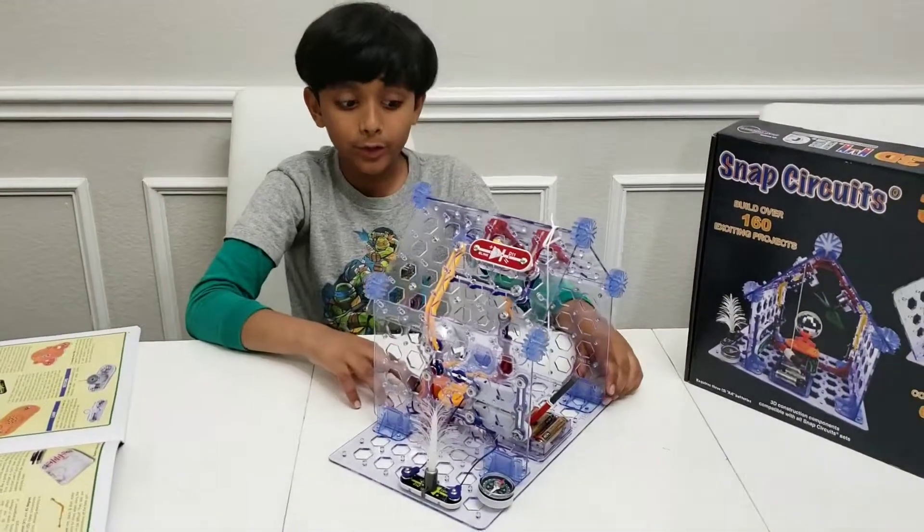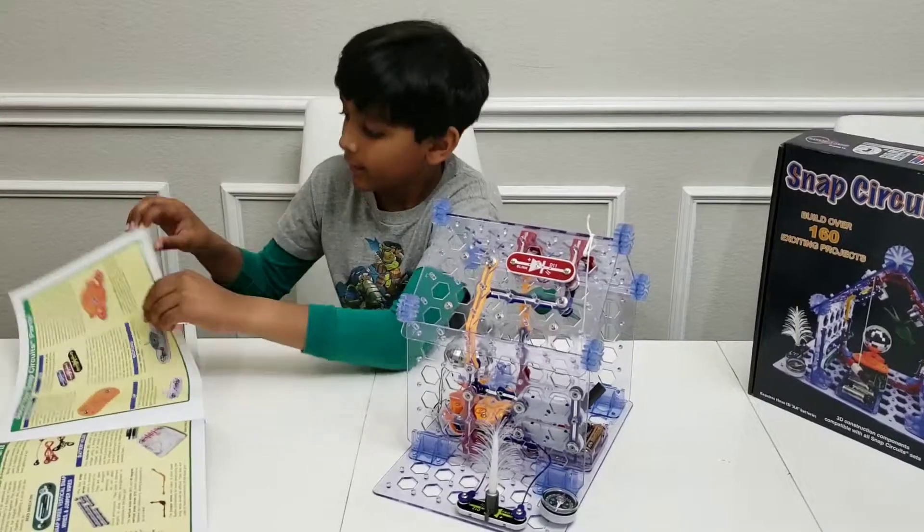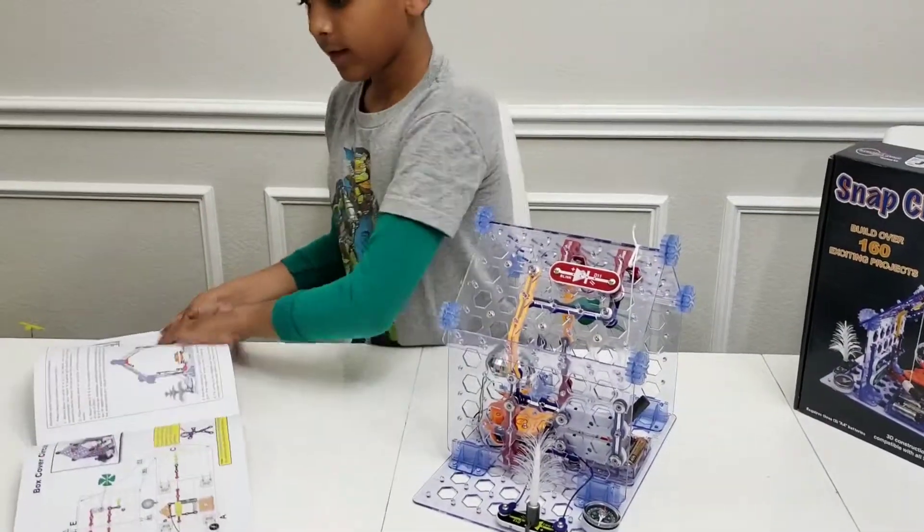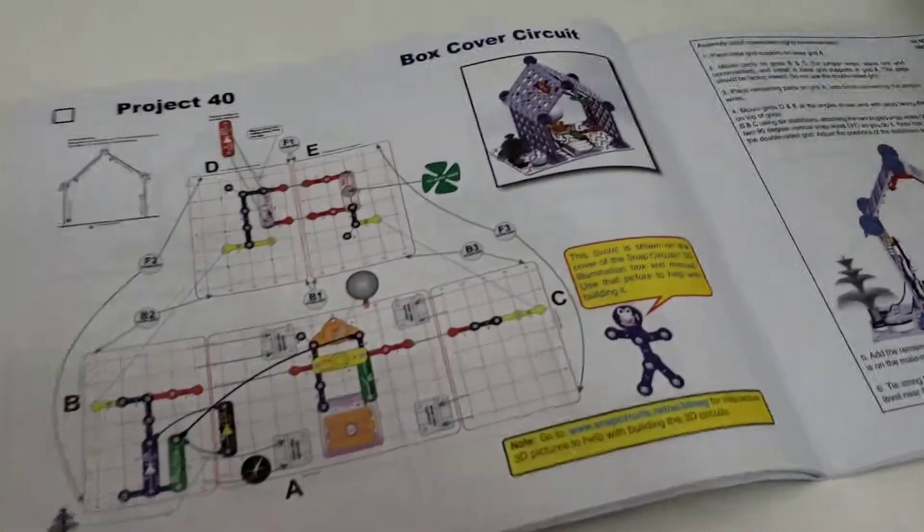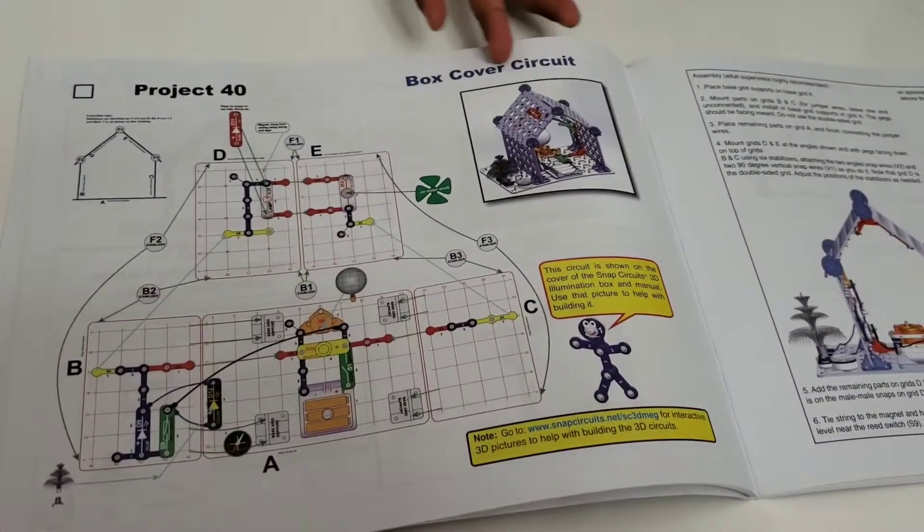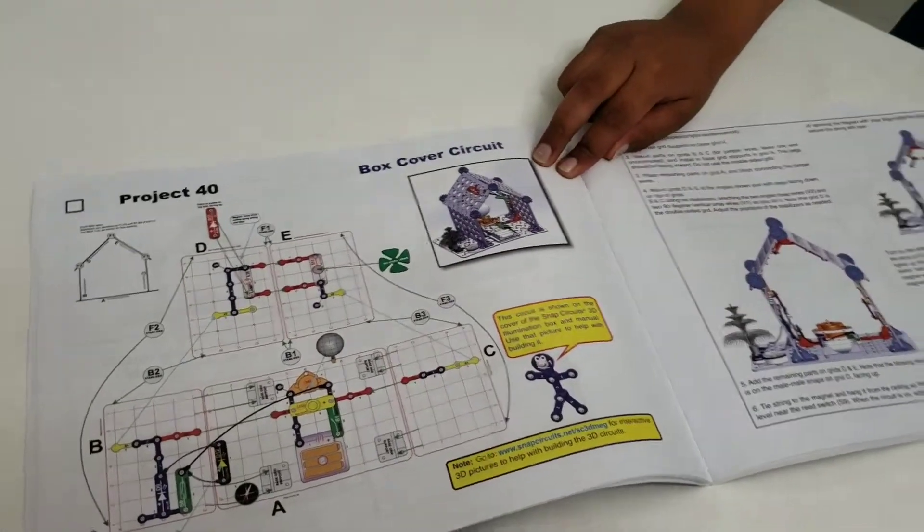Now that we've got through some of the components, let's take a look at this one. Right here, project 40. The project 40 is the one I built here. The box cover circuit. And it's called the box cover circuit, because it's on the box cover.